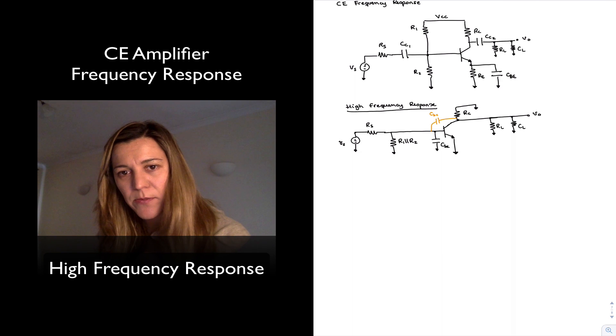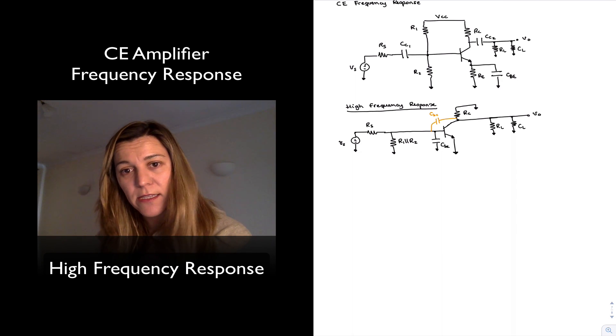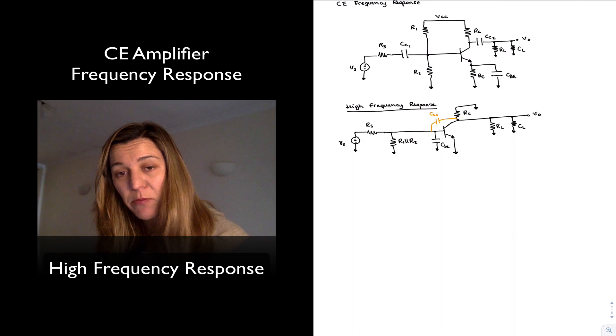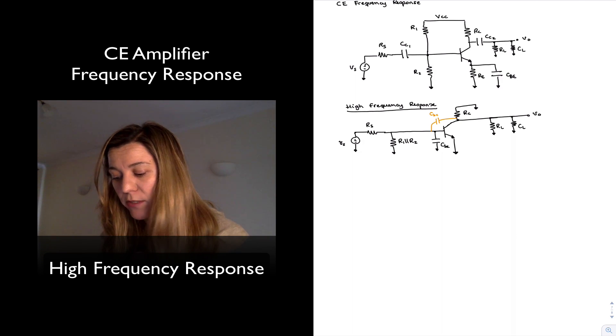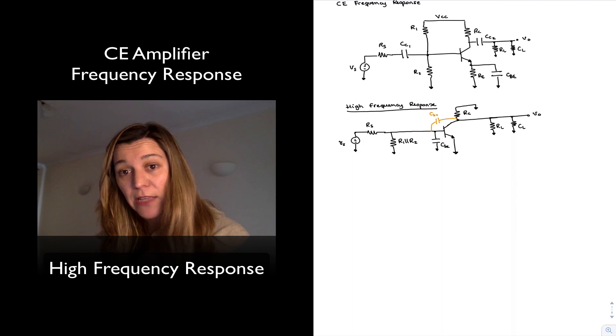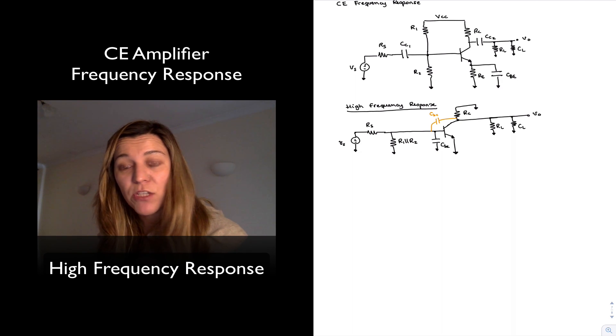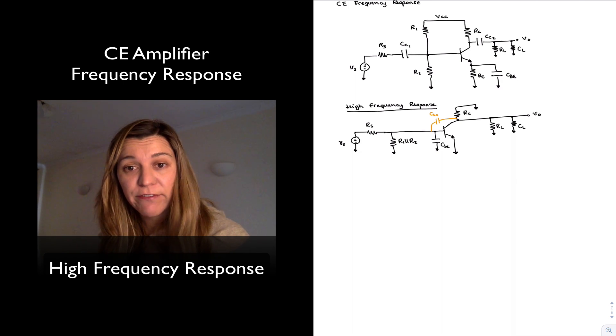Now this CBC capacitance is a feedback capacitance in this case, because it's a common emitter amplifier. We're applying the input signal at the base. We're taking the output out of the collector. And that capacitance happens to be connected between base and collector, between input and output. And it's therefore a capacitance in the feedback path, which is going to be affected by the Miller effect.